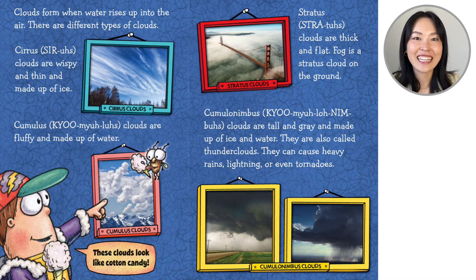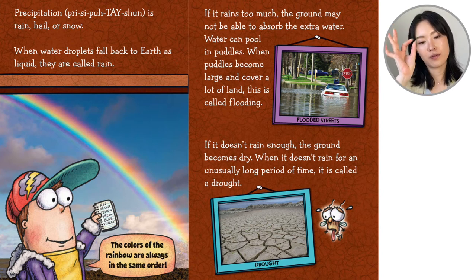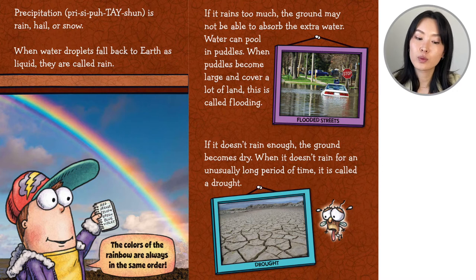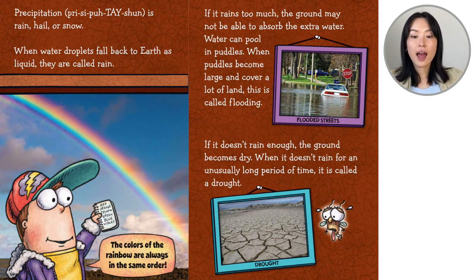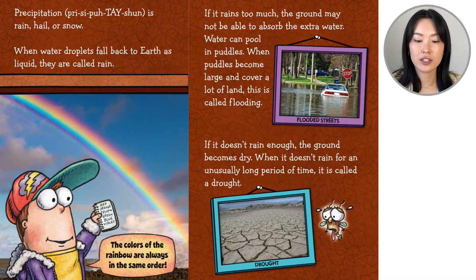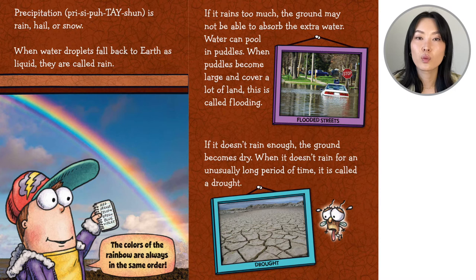By studying the clouds in the sky, you can know what kind of weather is going to come. Precipitation is rain, hail, or snow. When water droplets fall back to earth as liquid, they're called rain. If it rains too much, the ground may not be able to absorb the extra water — water can pool in puddles. When puddles become large and cover a lot of land, this is called flooding. This person's car has turned into a boat! But if it doesn't rain enough, the ground becomes dry. When it doesn't rain for an unusually long period of time, it's called drought.